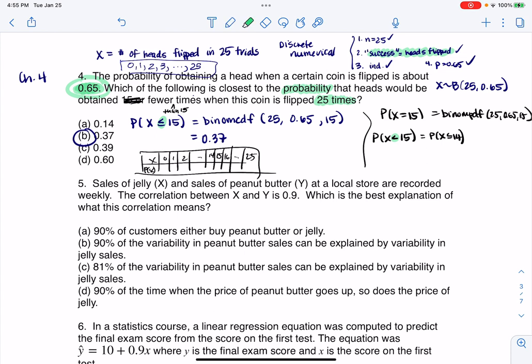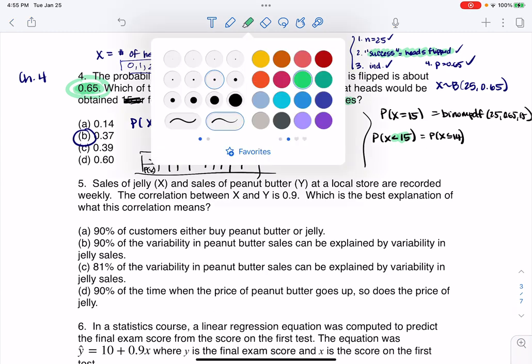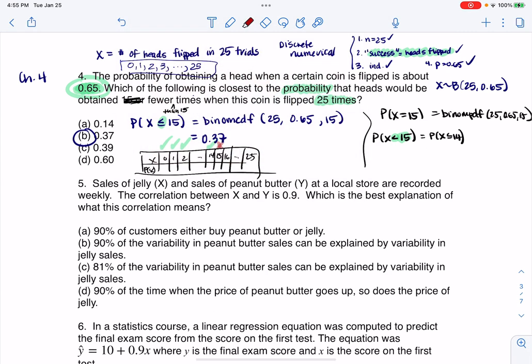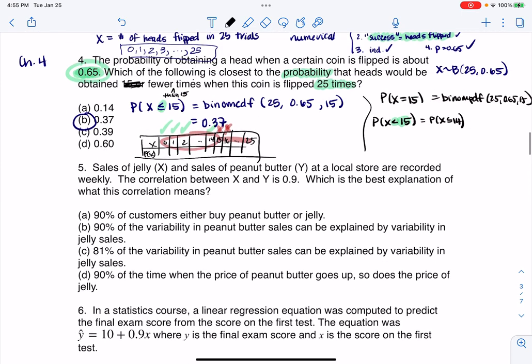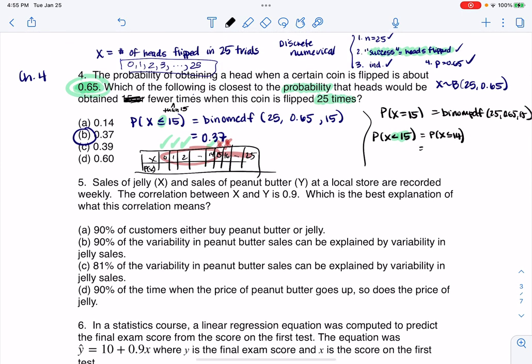So if I want strictly less than 15, zero is strictly less than 15, one is strictly less than 15, two is, 14 is strictly less than 15, but 15 is not strictly less than 15, 16 isn't, none of these are, so I would only want 14 on down. So that's when we would have done binomial CDF of 25, 65, and then 14.